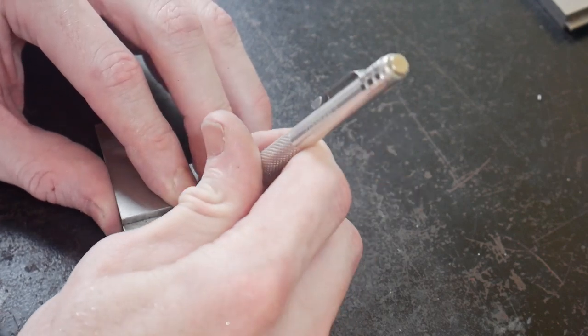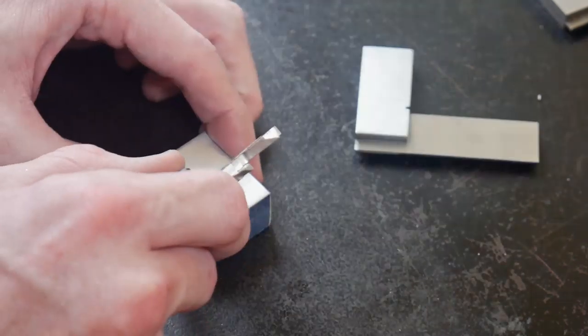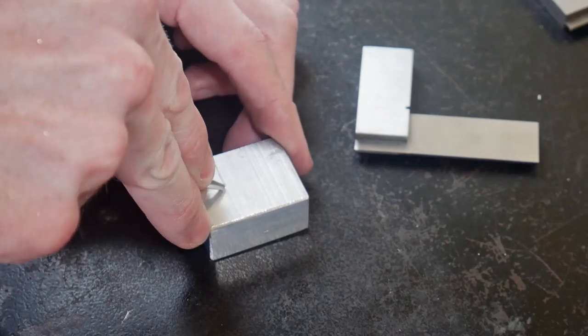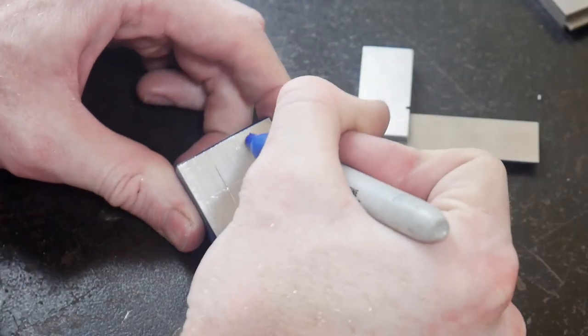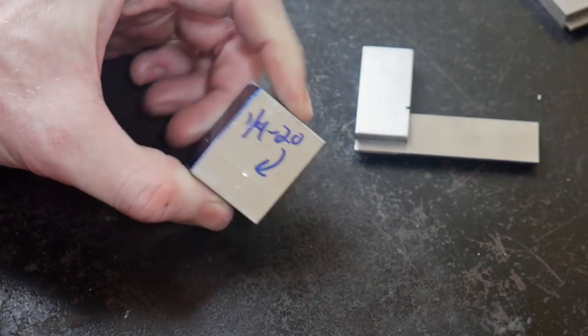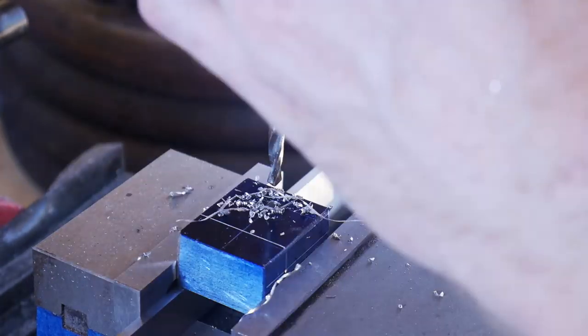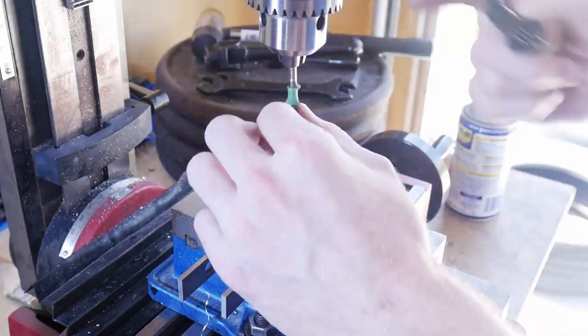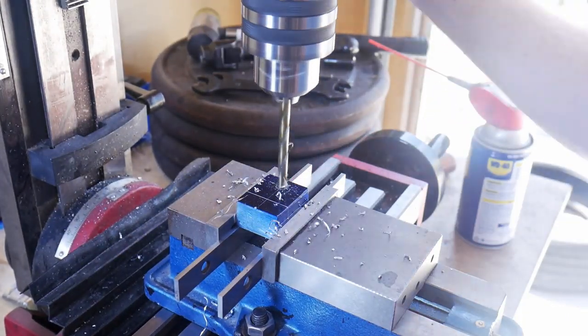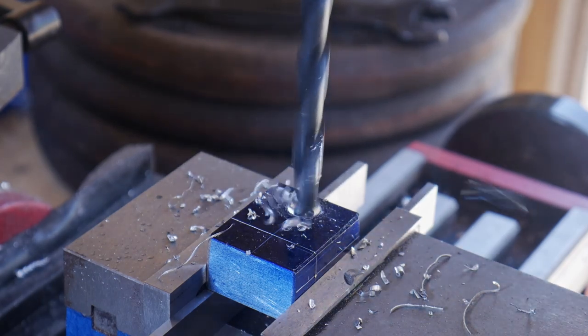So to recap, we're going to have a quarter by 20 set screw, a letter P hole for the scribe which is about 320 thousandths, and then a 3/8 hole which we're drilling now so that we can pass a bolt through this piece and connect it to the 321 block.